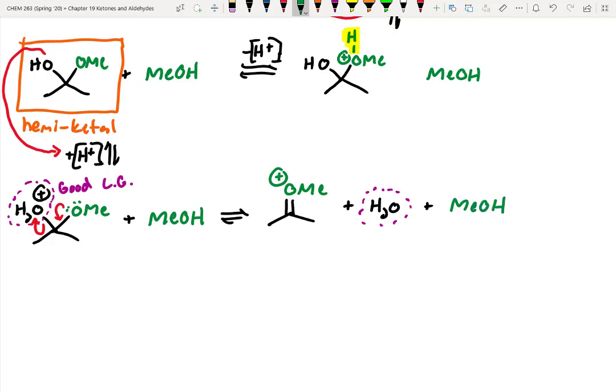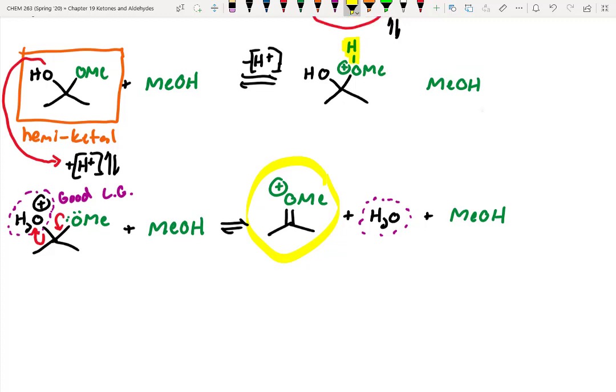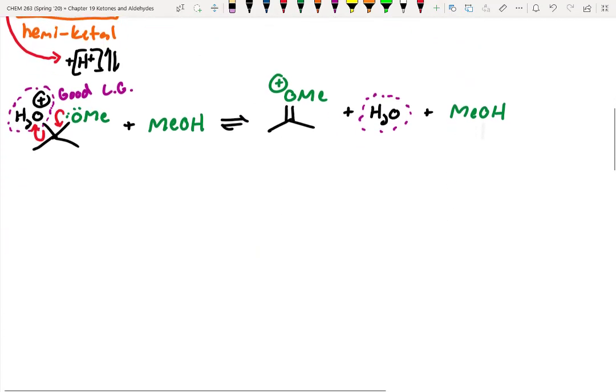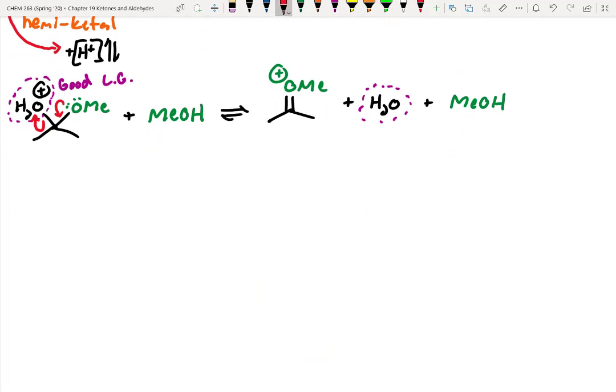Alright, so if we think about it, this intermediate has an oxygen with a positive charge. That means it's really unstable. And it kind of looks like this intermediate that we had up above. So what we could do is have some equivalent of methanol attack into that electrophile, just like we did in that second step. So let's go ahead and show that. So in this step, methanol can attack in and kick up electrons.